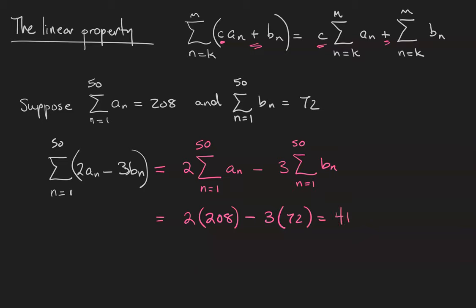2 times 208 is 416. 3 times 72 is 216. The sum is equal to 200.